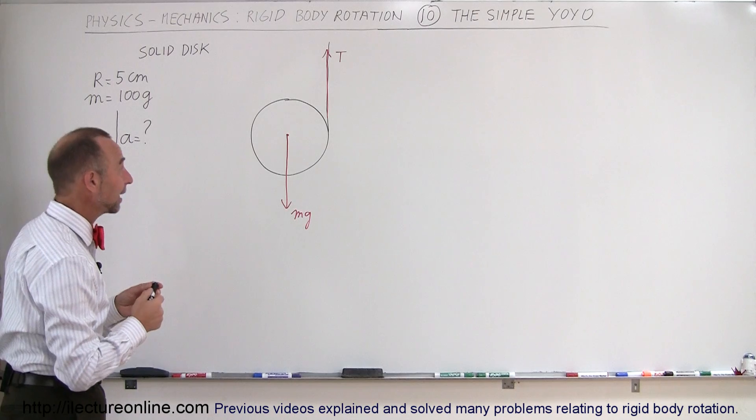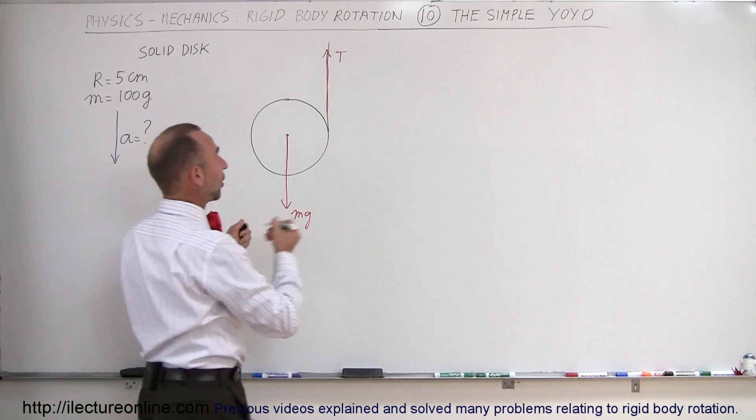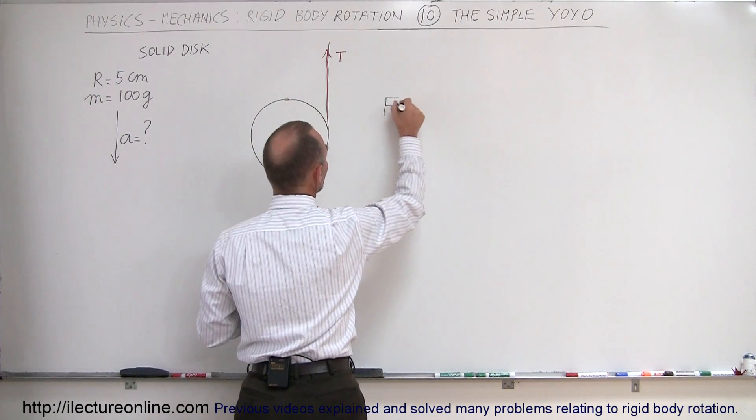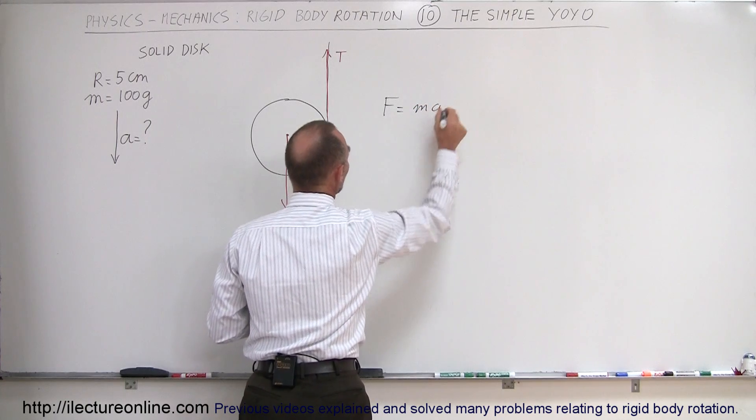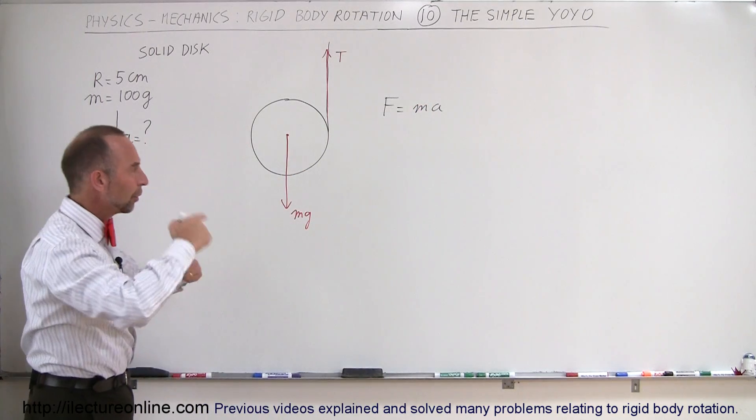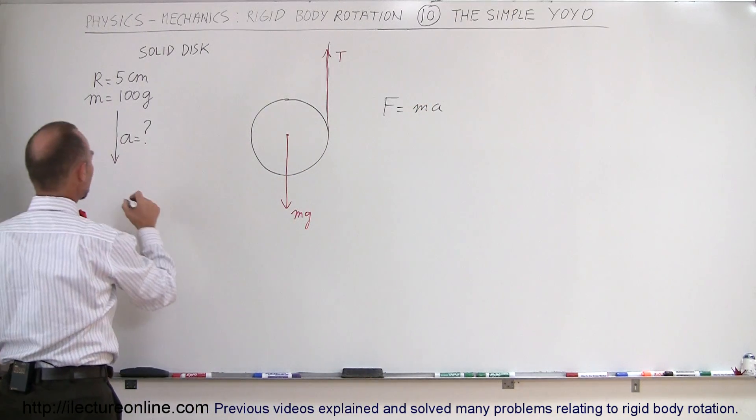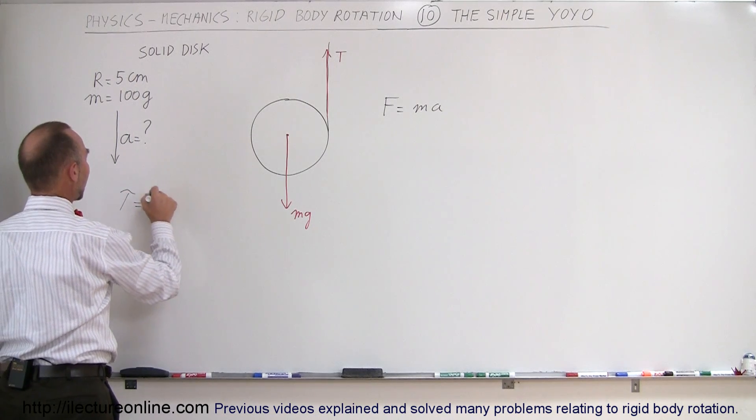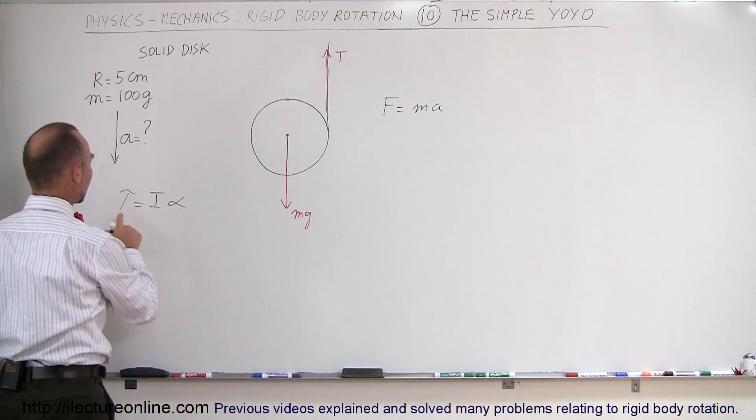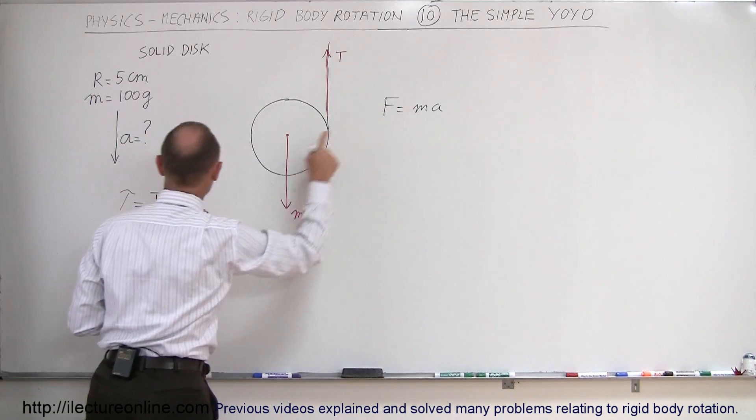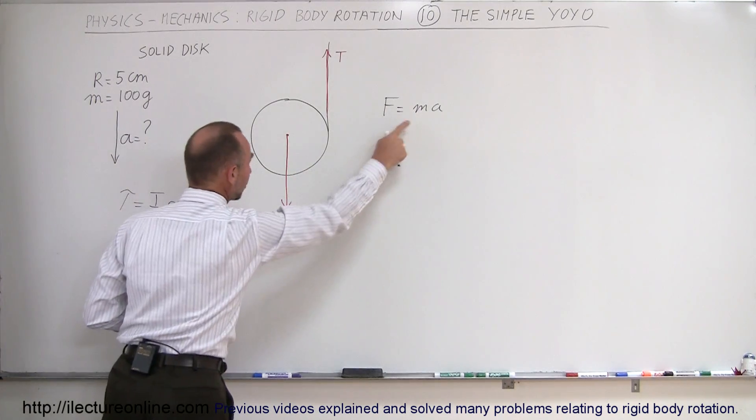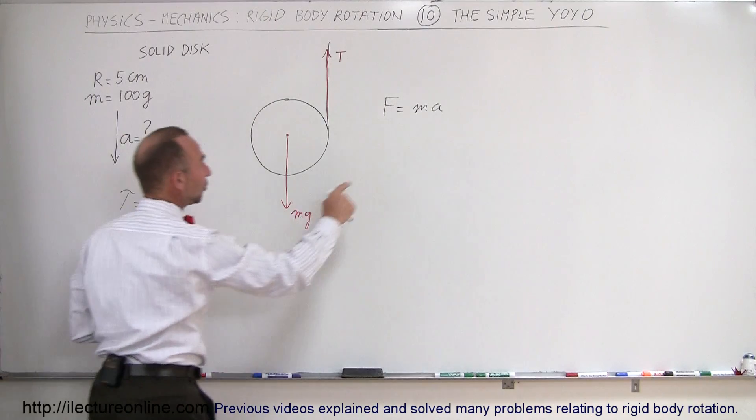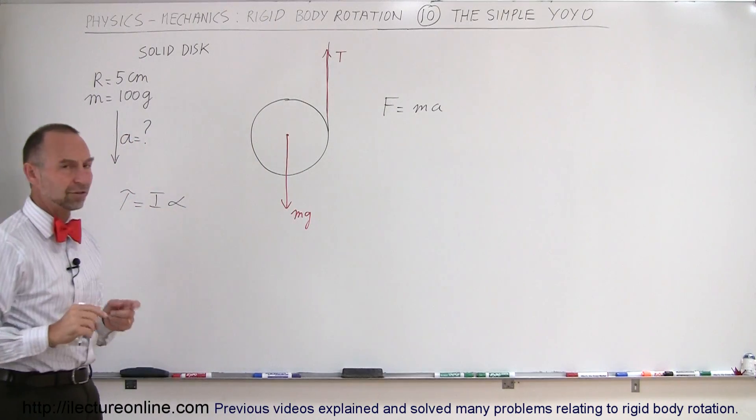To figure that out, we have to use two equations, starting with F equals ma, Newton's second law. And also, since the yoyo will be rotating, we will need the rotational equivalent of Newton's second law: torque equals I times alpha. You can see that instead of F we use torque, instead of mass we use the moment of inertia, and instead of acceleration we use angular acceleration.